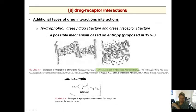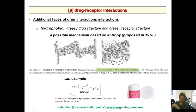The reference is 'Essentials of Molecular Pharmacology' from 1970 — an early idea of how entropy might drive this process. The example we provided last time is butamben, which is a greasy ester that interacts with isoleucine in a hydrophobic interaction between the butyl group and a sec-butyl group. This is a local anesthetic, part of a lidocaine-type gel drug mixture containing a few different chemicals used as local anesthetics — possibly in dentistry.